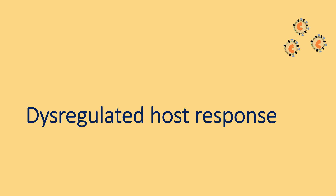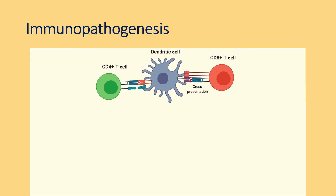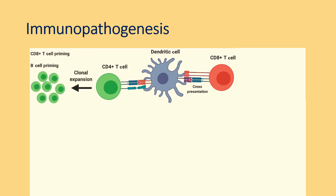The clinical features occur either due to acute viral infection or due to a dysregulated host response following the viral infection. Once the virus enters the body, the dendritic cells endocytose these viruses and present them to CD4 and CD8 cells. The CD4 cells cause CD8 cell priming and also B cell priming, which results in antibody secretion by activated B cells called plasma cells.